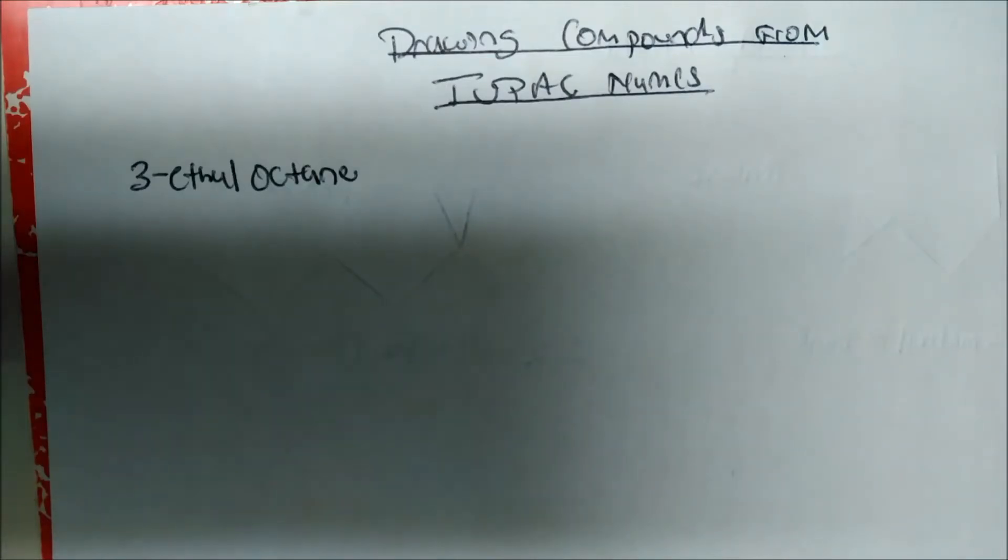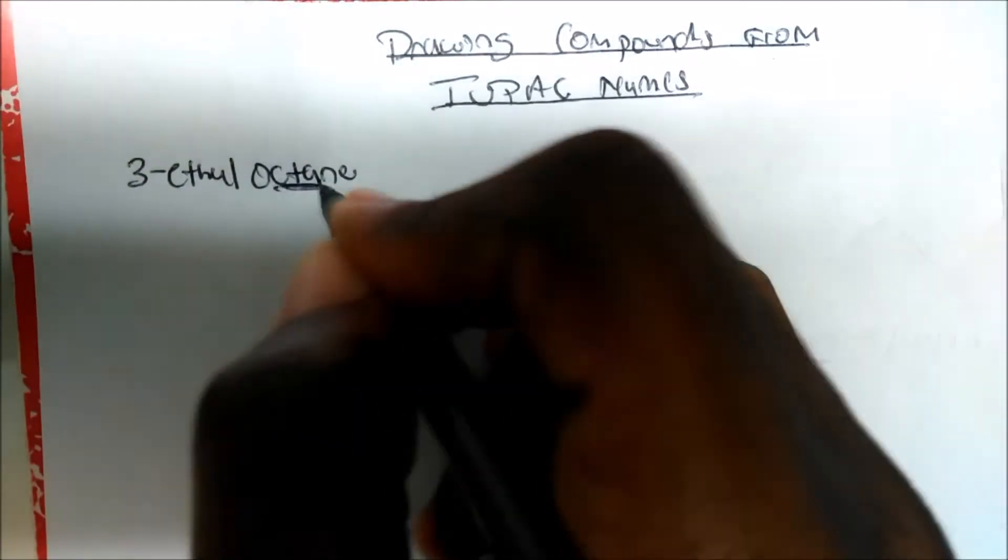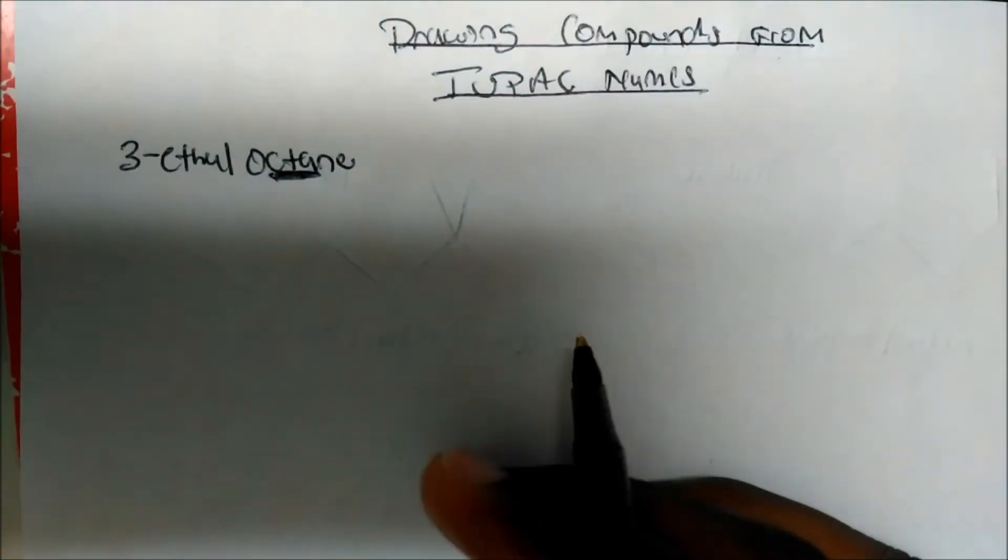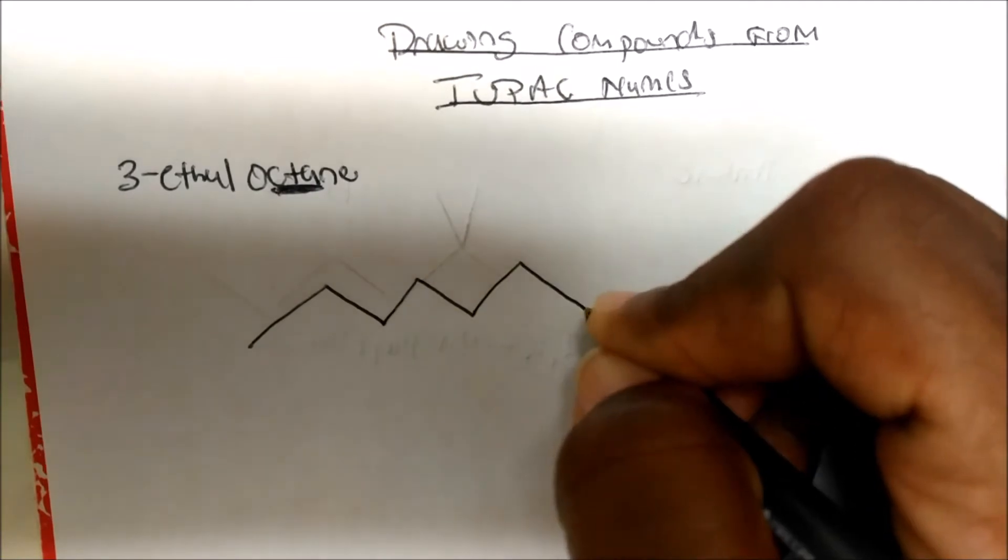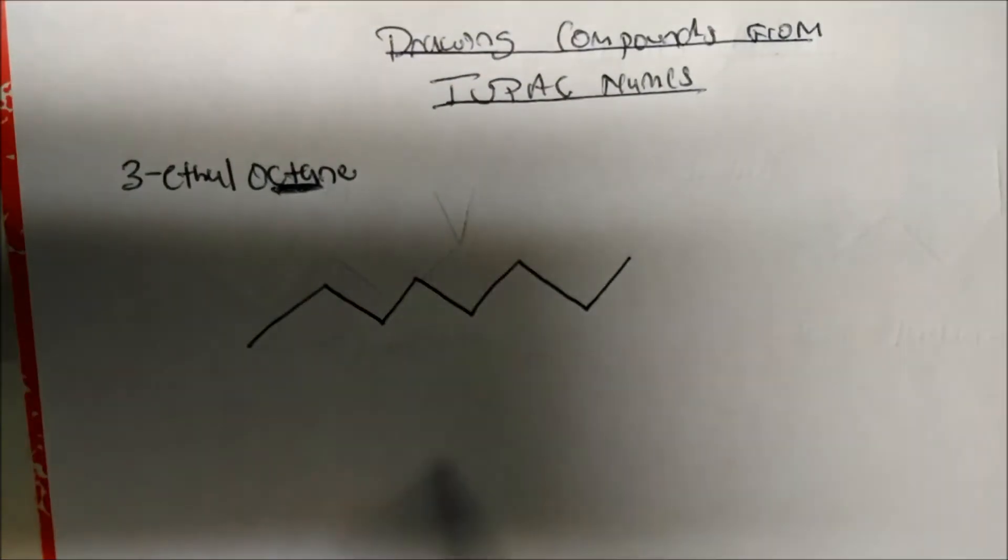We're going to draw some bond line structures from their IUPAC names. The first thing you want to do is identify the parent chain and draw it. So the parent chain will be octane in this case, the parent alkane. That is 8 carbons. So 2, 3, 4, 5, 6, 7, 8. This is my parent chain.